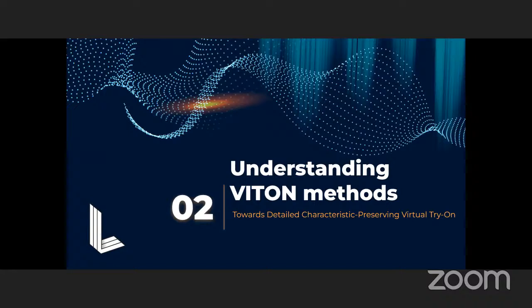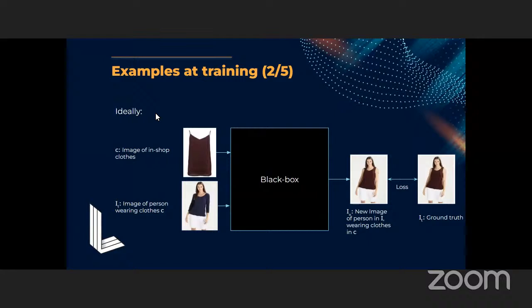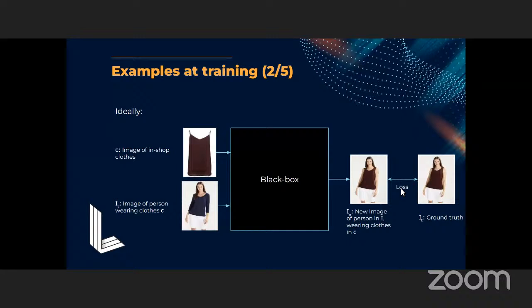Now let's go into the virtual try-on methods, starting with training. Ideally, you would have an image of in-shop clothes, an image of a person wearing different clothes, and a process that generates a new image of the same person wearing the clothes of interest, along with a ground truth. That ground truth should ideally be the input person wearing the clothes of interest in the exact same position — but that's hard. How do you get a model to pose in the exact same way twice wearing two different clothes? That's practically impossible and it's hard to get a dataset like that.